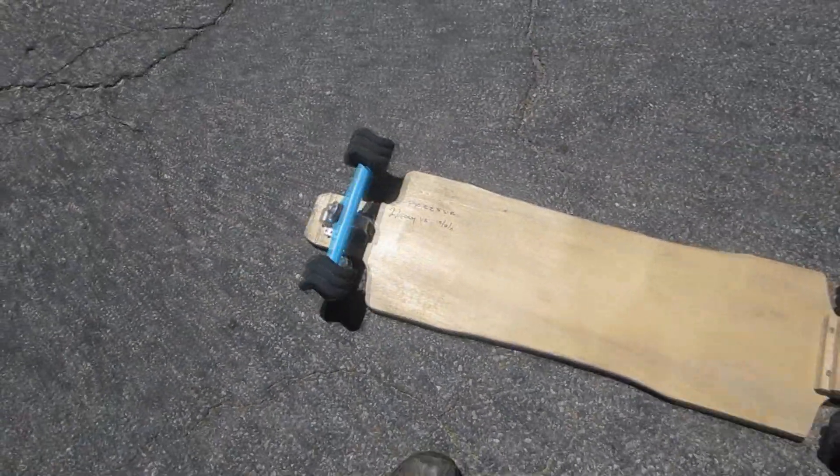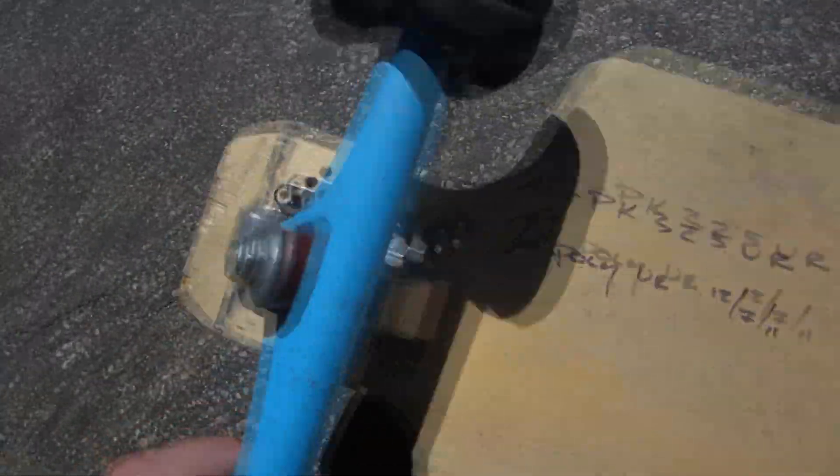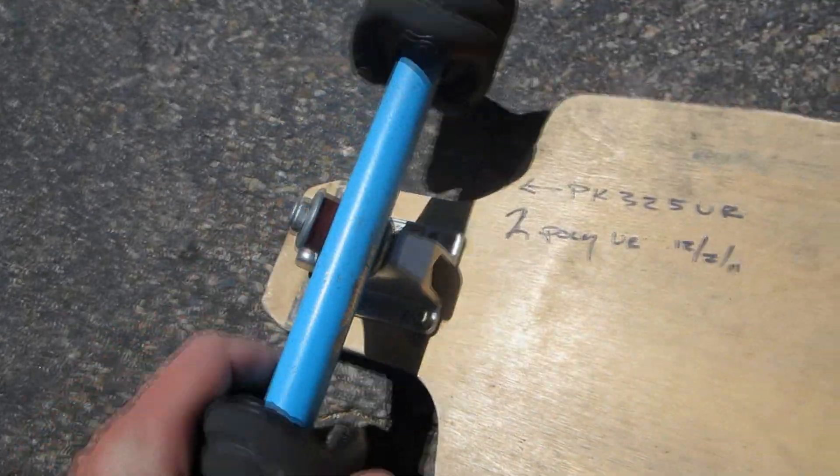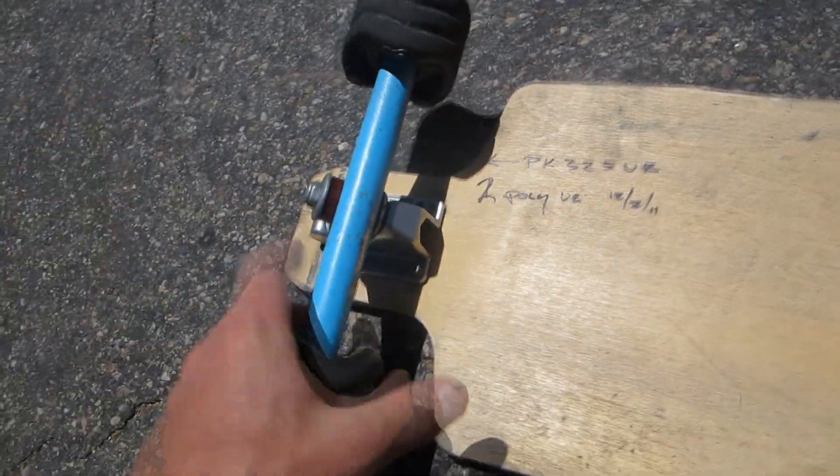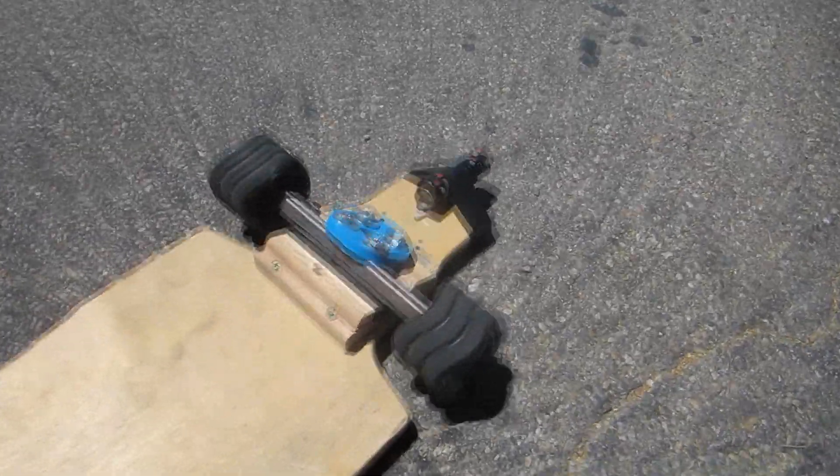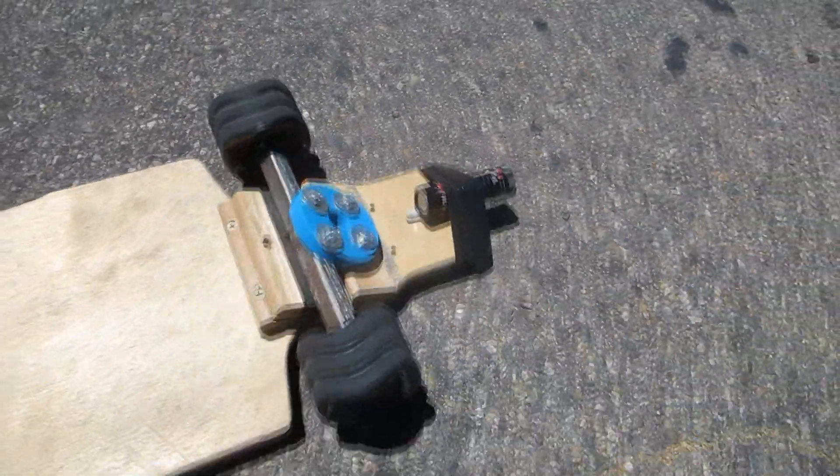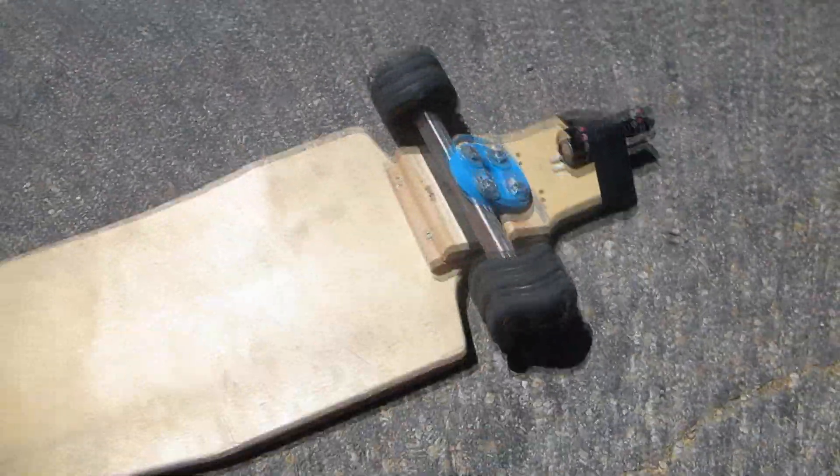I've got the gullwing trucks on the front. I'm using the patented Braille two-bolt strategy right now, and I've got the shark wheels on there because they're small and why not. I've got a camera mounted on the rear so I can see what's going on with the bushing.